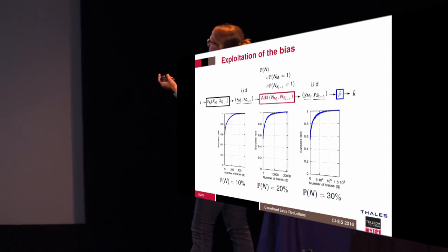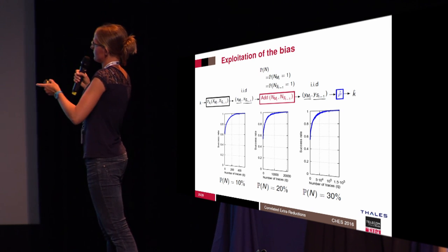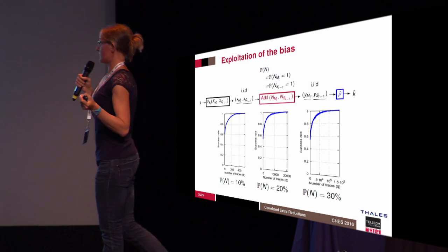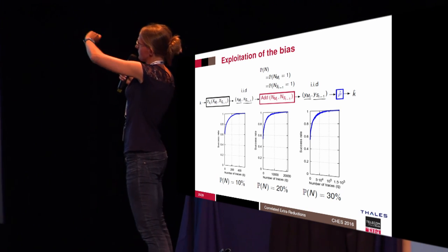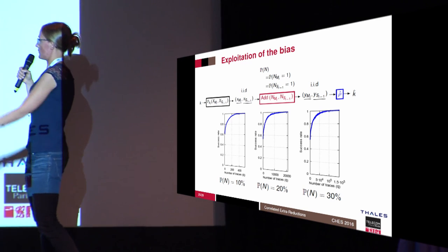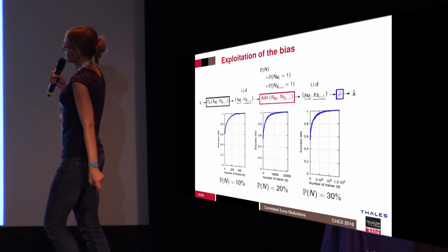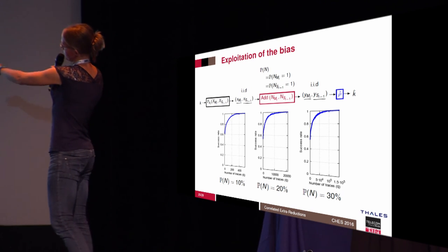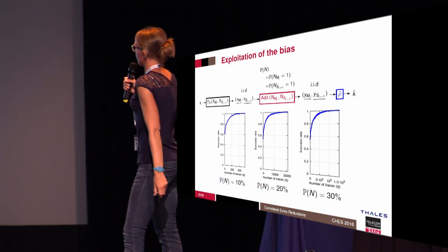To make this work, we run a simulation to find the required number of acquisitions. We estimate the number of traces for a given failure rate in extra reduction detection by adding noise to the simulation traces. With a 10% noise failure rate, the number of traces is 300. As the probability of noise increases, the number of traces increases, but remains reasonable.